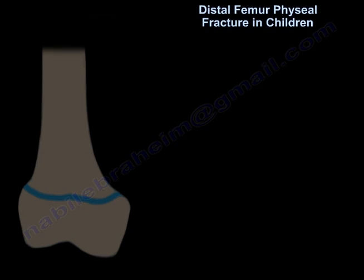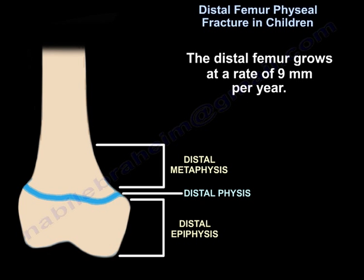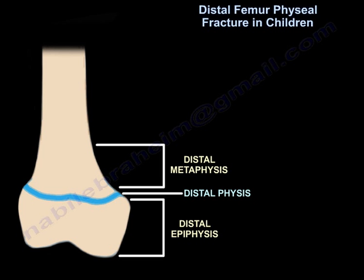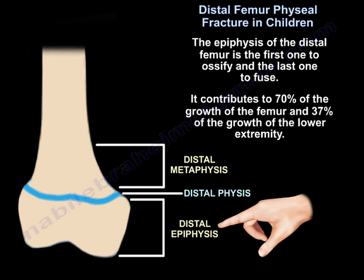The distal femur grows at a rate of 9 millimeters per year. The epiphysis of the distal femur is the first one to ossify and the last one to fuse. It contributes to 70% of the growth of the femur and 37% of the growth of the lower extremity.